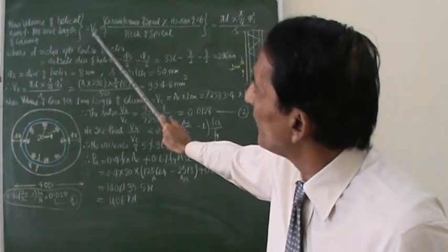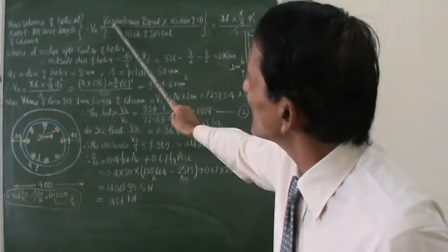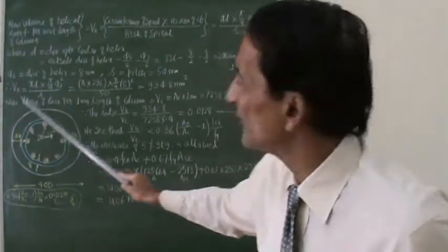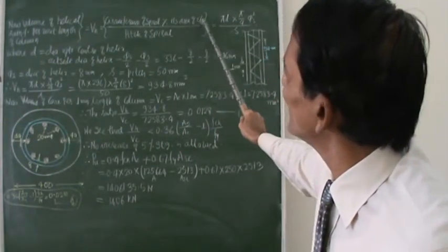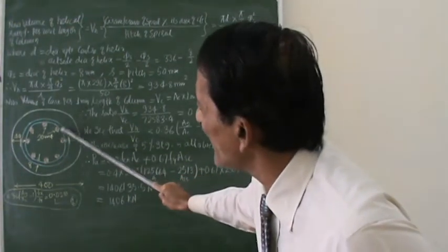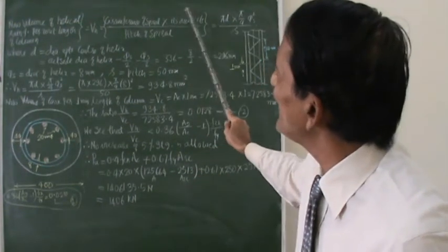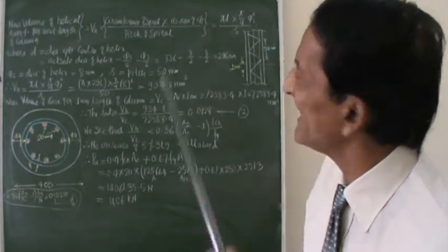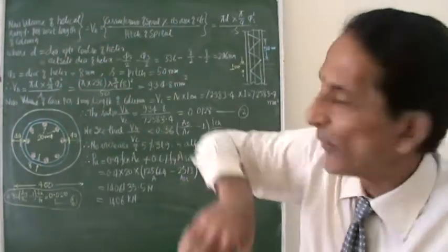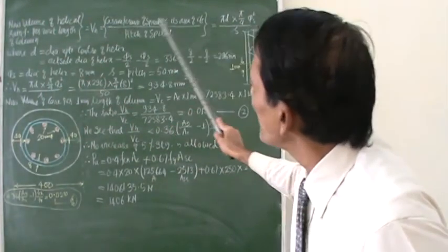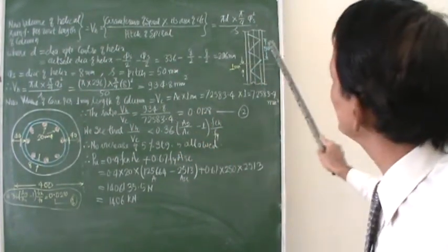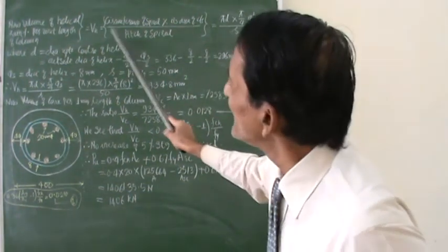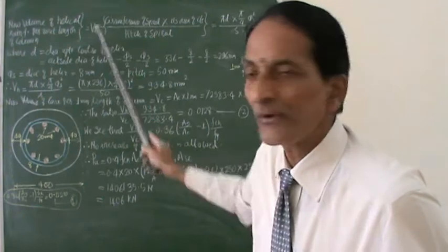VH can be calculated as the circumference of the spiral multiplied by its cross-sectional area. That will give me the total volume of the spiral. This is then divided by the pitch, which is 15mm. This will give me VH — the volume of helix reinforcement per unit length of the column.